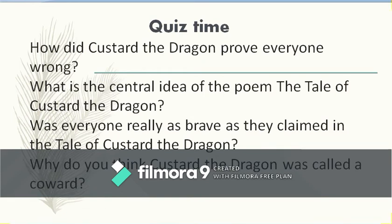Quiz time. How did Custard the dragon prove everyone wrong? He proved everyone wrong by showing his potential and by saving their lives. What is the central idea of the poem? The central ideas are: humour; appearances can be deceptive and what appears to be may not be the same in reality; and do not poke fun at people around you — they might have hidden, latent potential. Was everyone really as brave as they claimed? No — appearances are deceptive. Custard eventually saved their lives, a clear situational irony.